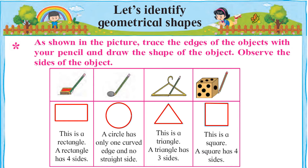Activity number four — last activity: is activity mein aapko triangle, four-sided figure aur circle jaisi shakloon ki madad se dilchasp tasveer banaani hai. Maine yahan par triangle, circle aur four-sided figure ki madad se ek dilchasp tasveer banayi hai — isi tarah ki tasveer yaani picture aapko banaani hai, aur usme aap color bhi kar sakte ho. To students, aapko yeh chaar activities complete karni hain.